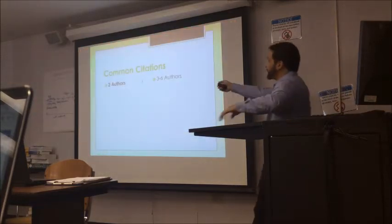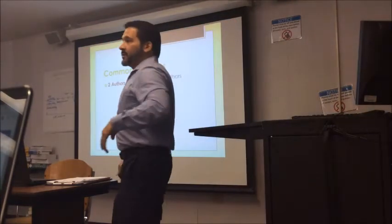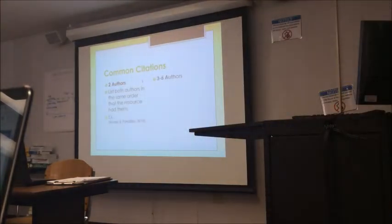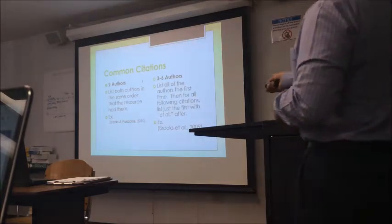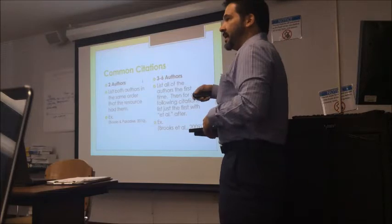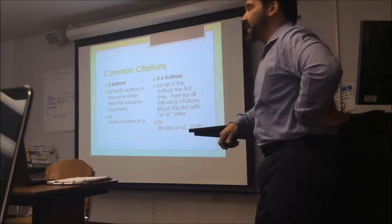So we talked about three or six or more authors. Very rare do we find more, but it could happen. More than six authors. So that's what we're talking about: ET, all, period, comma. Then you have the year, the published date.